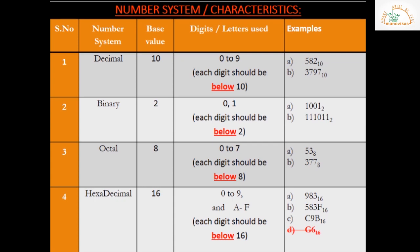Suppose I write an example as G6 — is it a hexadecimal number system? No. The reason is G doesn't belong to the list of digits used by the hexadecimal system, which only goes from A to F.